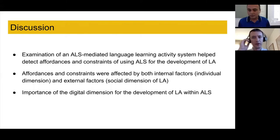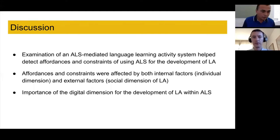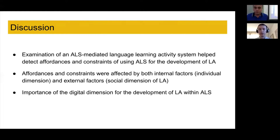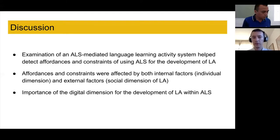The examination of an adaptive learning system-mediated language learning activity system helped us detect both affordances and constraints of using adaptive learning systems for the development of learner autonomy. We found that these affordances and constraints were affected by internal factors from the individual dimension of language learners, as well as external factors from the social dimension — specifically the instructor and the features of the system. The digital dimension was also important for learner autonomy development, related to the relatively steep learning curve that a number of participants reported when learning how to use the adaptive learning systems.